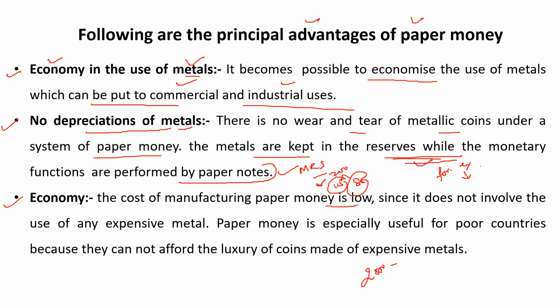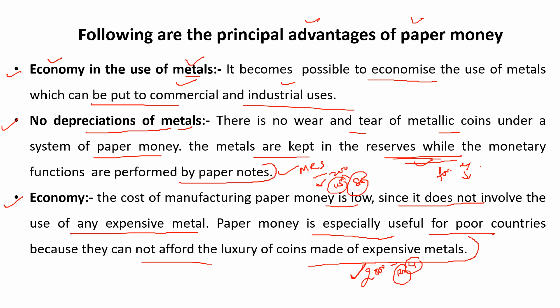The price of gold kept in reserve is approximately 4 rupees, but you can issue currency of 2,000 value. So paper currency is very easy compared to metal coins. Since it does not involve the use of any expensive metals, paper money is especially useful for poor countries because they cannot afford the luxury of coins made of expensive metals.